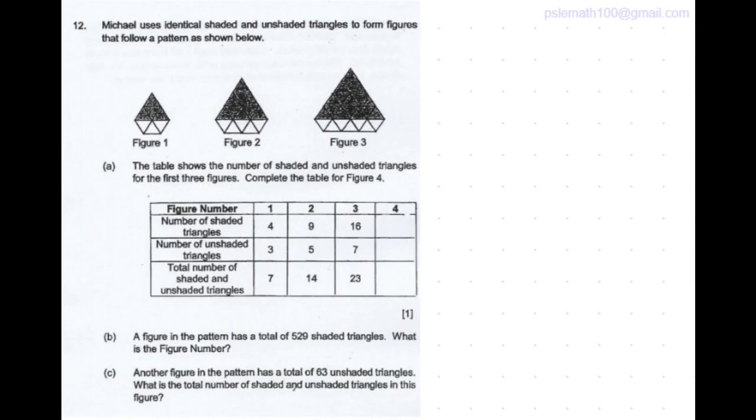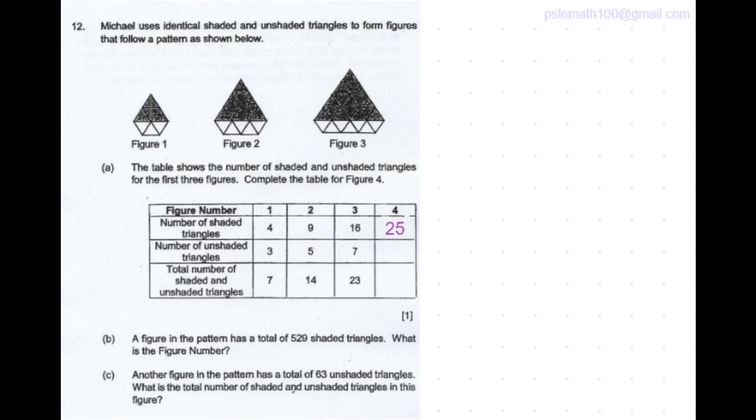The number of shaded triangles for figure 1 is 4 which is 2 times 2. Number of shaded triangles for figure 2 is 9 which is 3 times 3 and for figure 3 is 16 which is 4 times 4. So these actually follow square number pattern. So for figure 4 it is 5 times 5 which is 25.